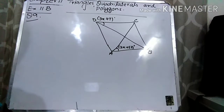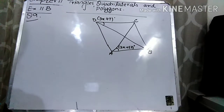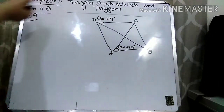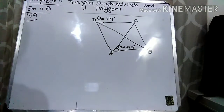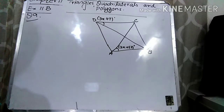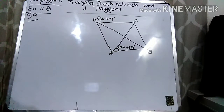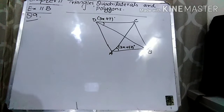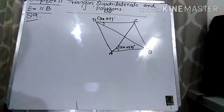Assalamualaikum students, how are you all? I hope that you all are doing great. Welcome to your channel Maths D1D2 Cyclic Academy. Today our lecture is related to chapter 11, which is triangles, border letters and polygons. I am going to explain exercise 11B question number 9. If you want more help regarding your subject, then you can subscribe to the channel.